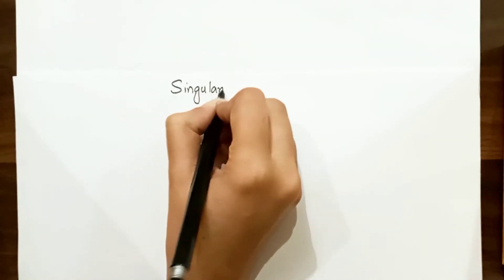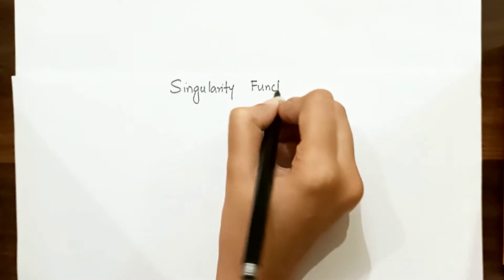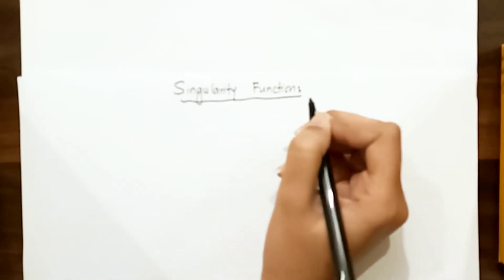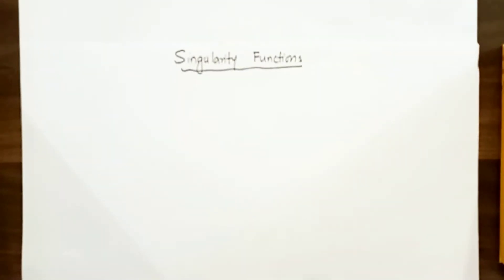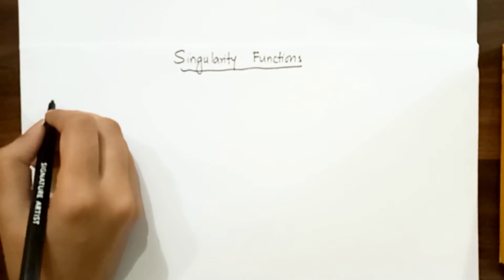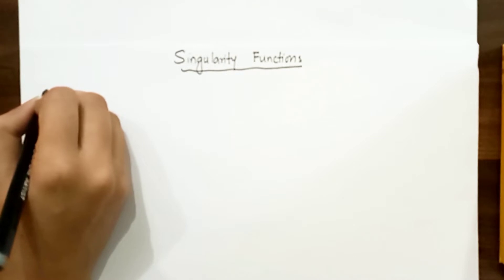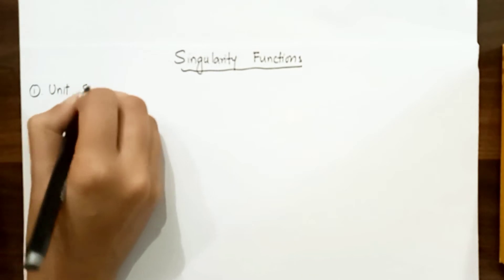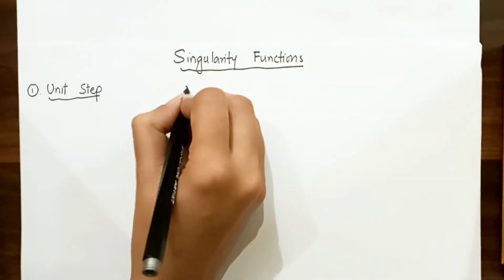In switching operations, singularity functions are used as a good approximation to the switching signals, and they are used in the step response of RC and RL circuits, which we will discuss in the next video. Singularity functions are either discontinuous or have discontinuous derivatives. The most widely used singularity functions are the unit step function, unit impulse function, and ramp function.